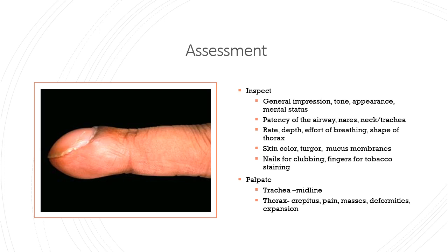Consider age-related changes that would be normal for the patient. Pediatrics have large tongues and narrow airways, short and straight eustachian tubes, and immature immune systems — they are obligate nose breathers. Older adults have stiffening of the ribcage; kyphosis, lordosis, and scoliosis are more common. They have decreased chest wall compliance, and the diaphragm and intercostal muscles lose strength. Tissues are less elastic and there's an increased potential for bronchospasm. Gas exchange is impaired due to decreased cough reflex and decreased response to changes in CO2 and O2. Chronic inflammation of lung tissue is more common as we age.